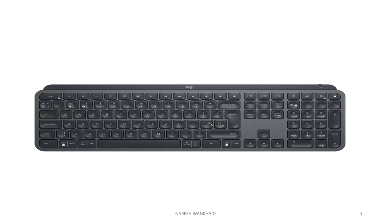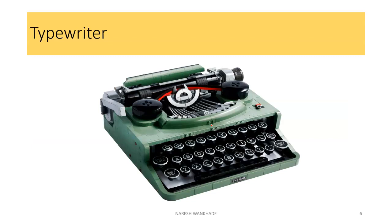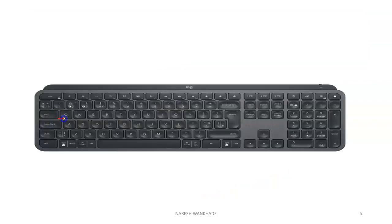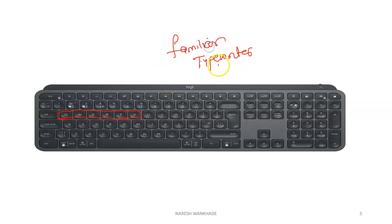Here you can see the keyboard layout, and this is a typewriter. You can see the key pattern of the typewriter — the typewriter keys start with Q, W, E, R, T, Y. So this type of pattern is known as the QWERTY key pattern, and you can see the same pattern on your keyboard, which is also known as the QWERTY pattern.